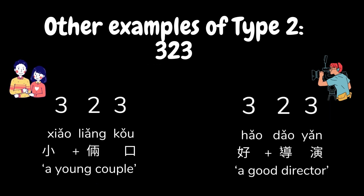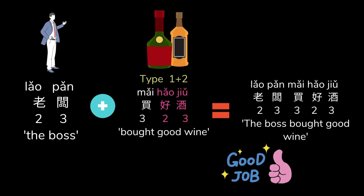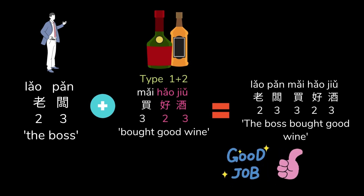Other examples of the one-plus-two type like 小两口, which is made with 小 and 两口, and 好导演, which is made with 好 and 导演, can be analyzed in the same way. Even more third-tone characters such as 老鼠买好久 may appear together to form a phrase or a sentence. How would you adjust your tone for those sequential third-tone characters? Knowing how to break the language into multiple pieces or groups will make things simpler.